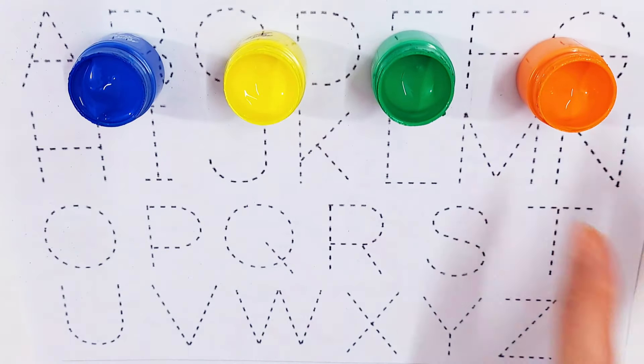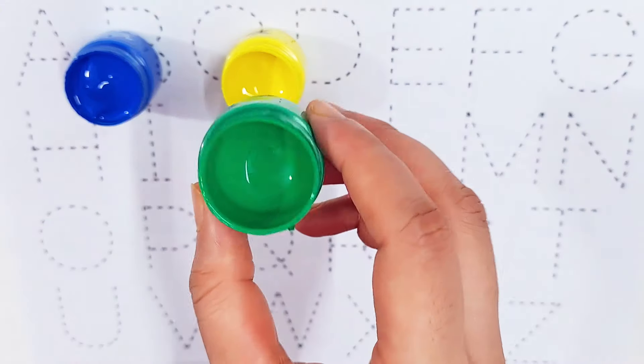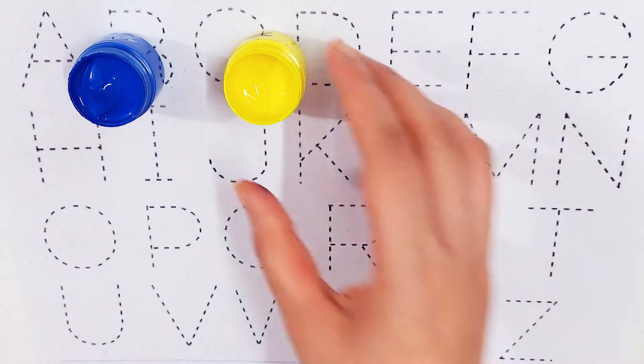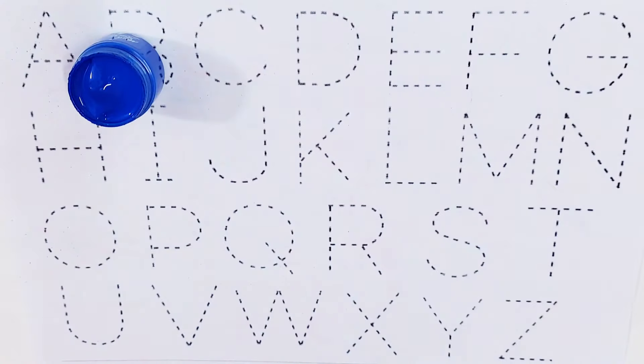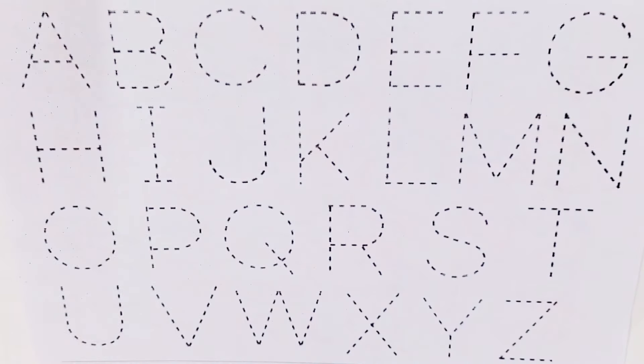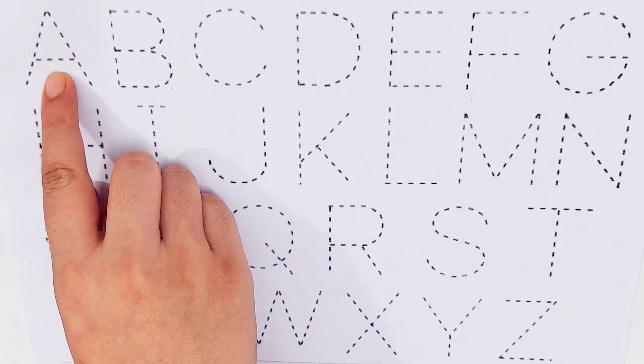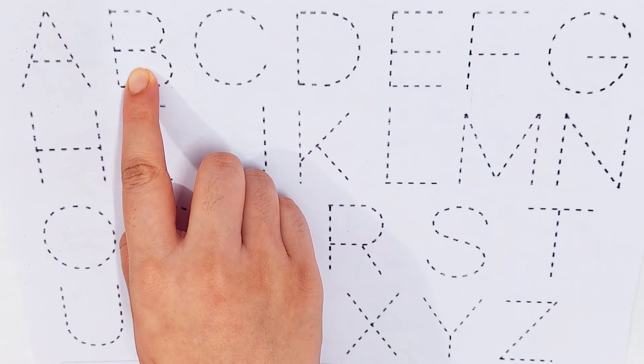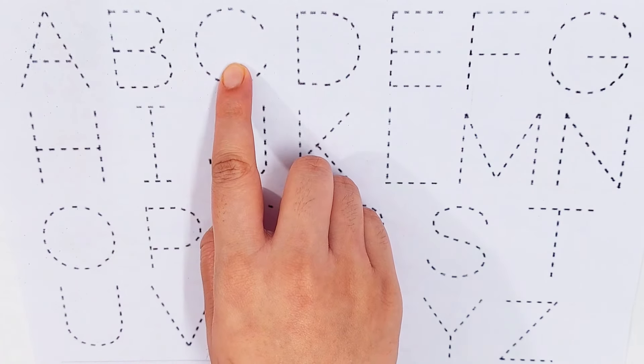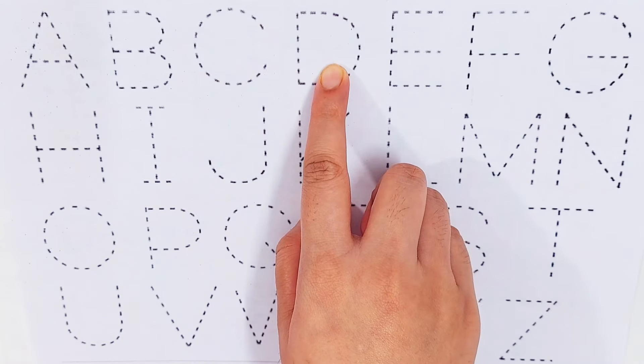Violet, orange, green, yellow, dark blue. Today we will learn some alphabets. A for avocado, B for broccoli, C for cherry, D for duck.